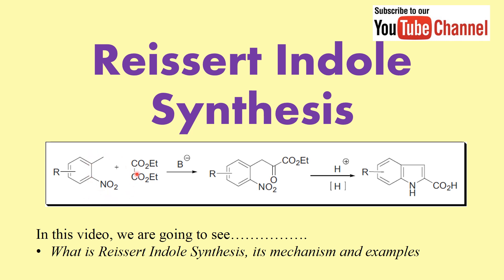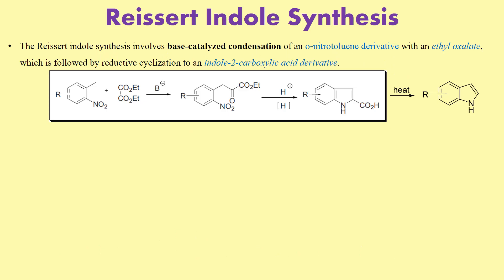In this method, what do we do? We start with ortho-nitrotoluenes and we treat it with ethyl oxalate in the presence of a base. So this is a base-catalyzed condensation followed by reduction to give you the indoles.